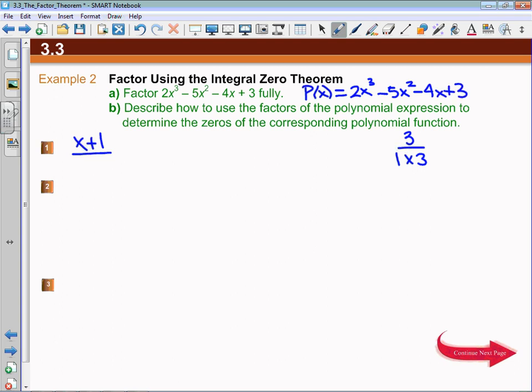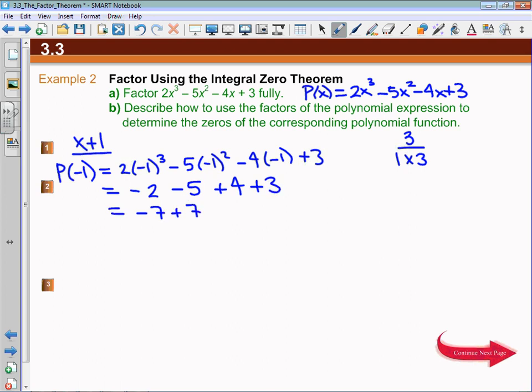I am going to check to see if x + 1 is a factor. I'm going to check the polynomial value at negative 1. That's going to be 2(-1)³ - 5(-1)² - 4(-1) + 3. That's equal to -2 - 5 + 4 + 3, which is -7 + 7, which is 0.